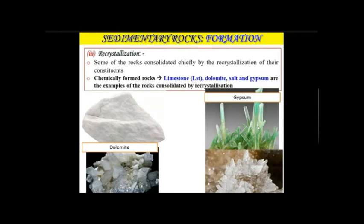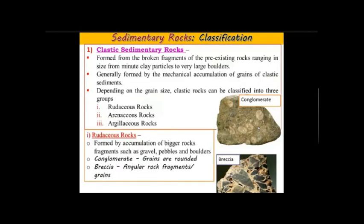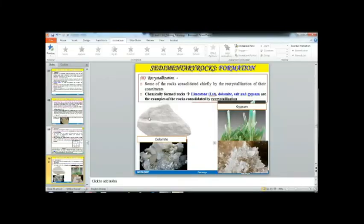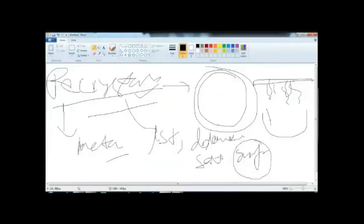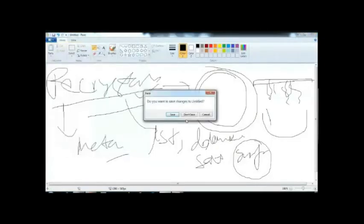Sedimentary rocks can be classified into two basic types: clastic sedimentary rock and non-clastic sedimentary rock. Clastic sediments are the broken fragments of pre-existing rock. Pre-existing rock — which could be igneous or metamorphic — breaks down and the rock fragments are called clastic sediments.